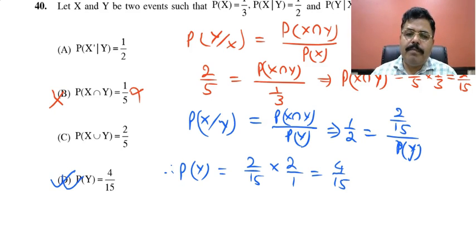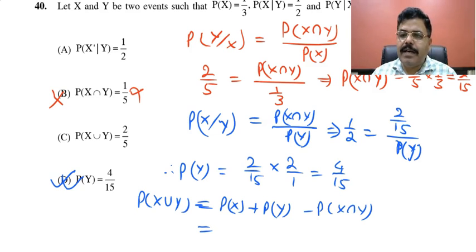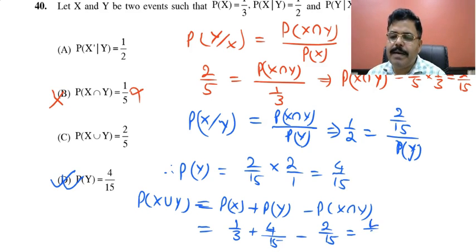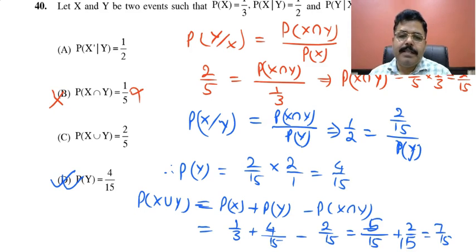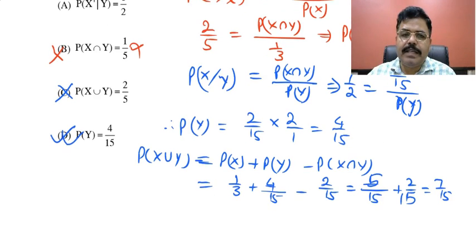Now we calculate P(X∪Y) = P(X) + P(Y) − P(X∩Y) = 1/3 + 4/15 − 2/15. Converting: 1/3 = 5/15, so 5/15 + 4/15 − 2/15 = 7/15. Since 7/15 is not among the given options for that choice, C is a wrong answer. Now we check option A: P(X'|Y).